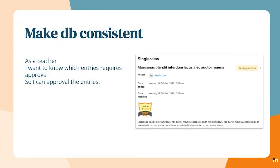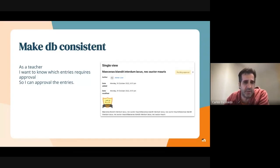Another thing that was commented from UX and PXT was to add a badge to show the teacher which one of the entries requires approval. So right now we have a general badge with the new string 'pending approval' for the entries that need attention from the teacher. Once the teacher approves an entry, the badge is no longer visible.